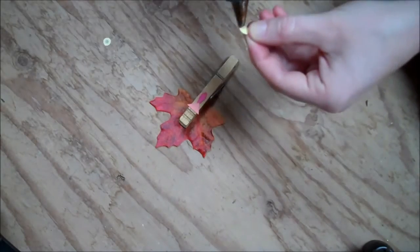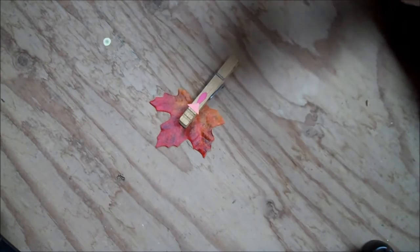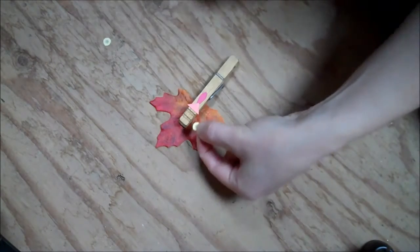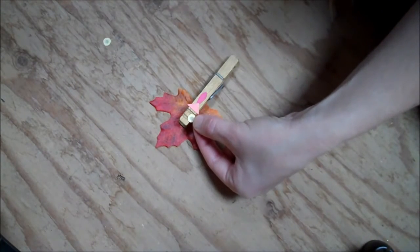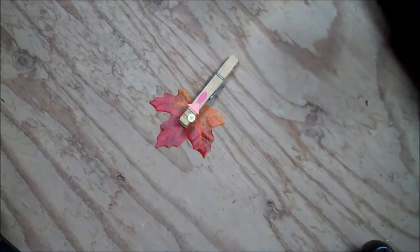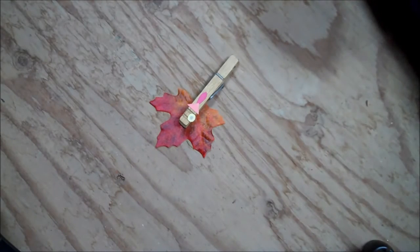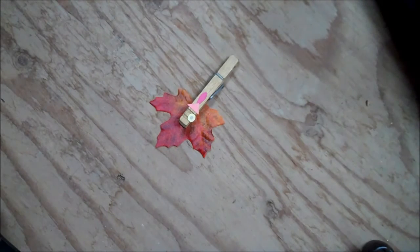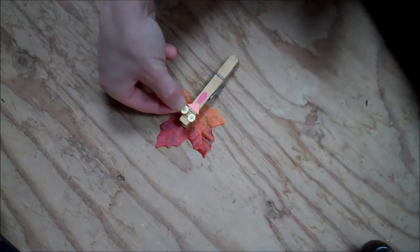And then take your eyes and put some glue on the back of those. And I'm using hot glue here just because it dries faster. But if you're doing this with kids, you're just going to want to use white school glue in order to maintain a safety factor. So you just glue on both the eyes.